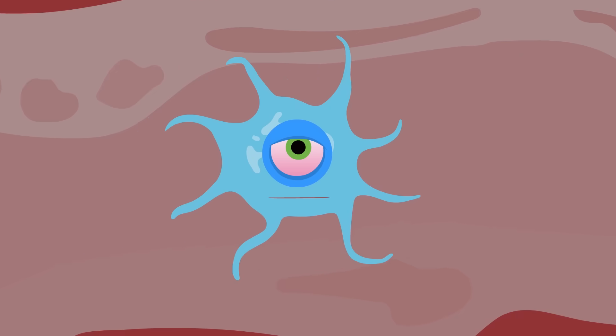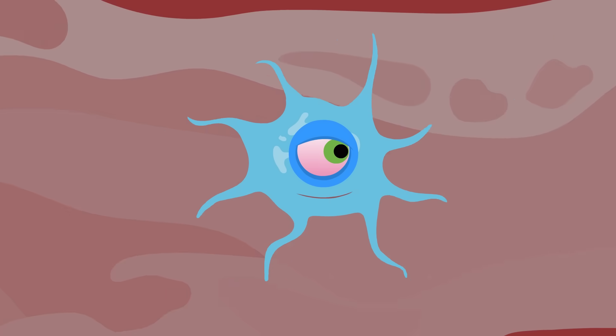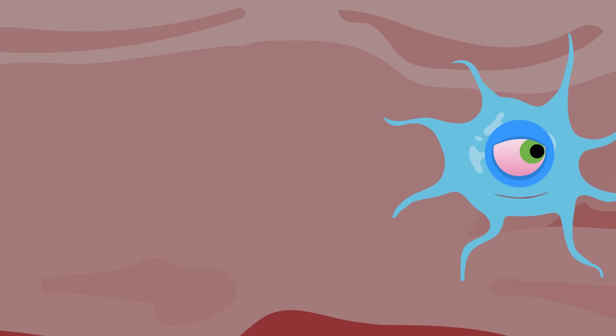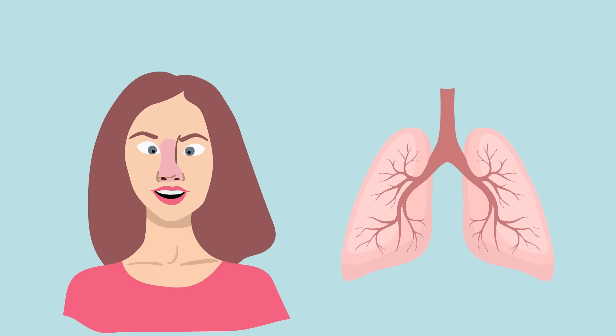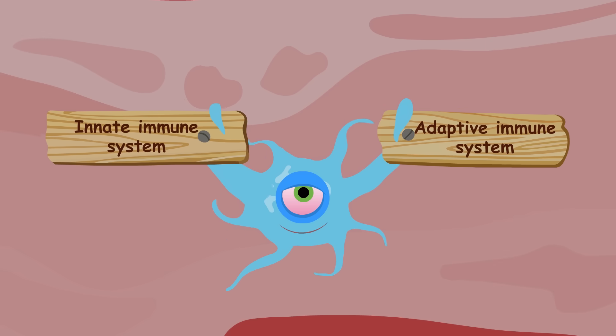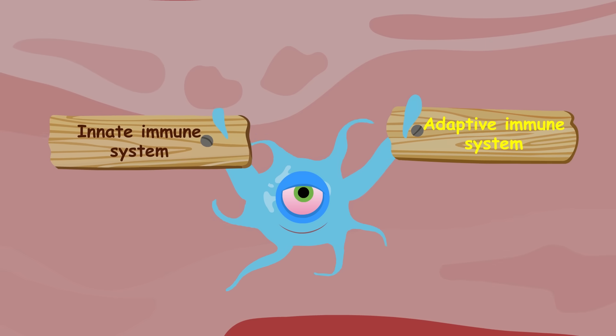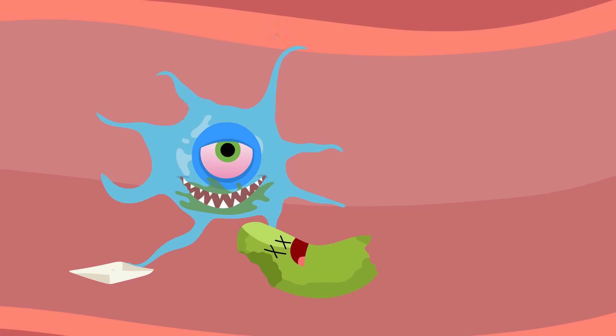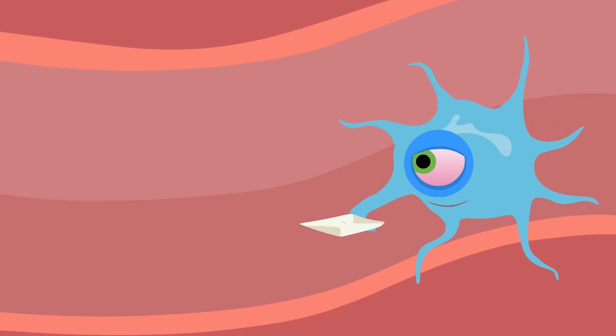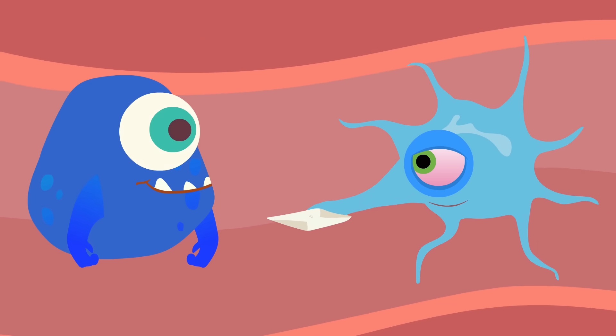The last cells of our innate immune system are the dendritic cells. These are found in places that come in contact with the outside environment, such as the nose and lungs. They are the link between our innate and adaptive immune systems. They eat a pathogen, and then carry information about it to our adaptive immune system cells.